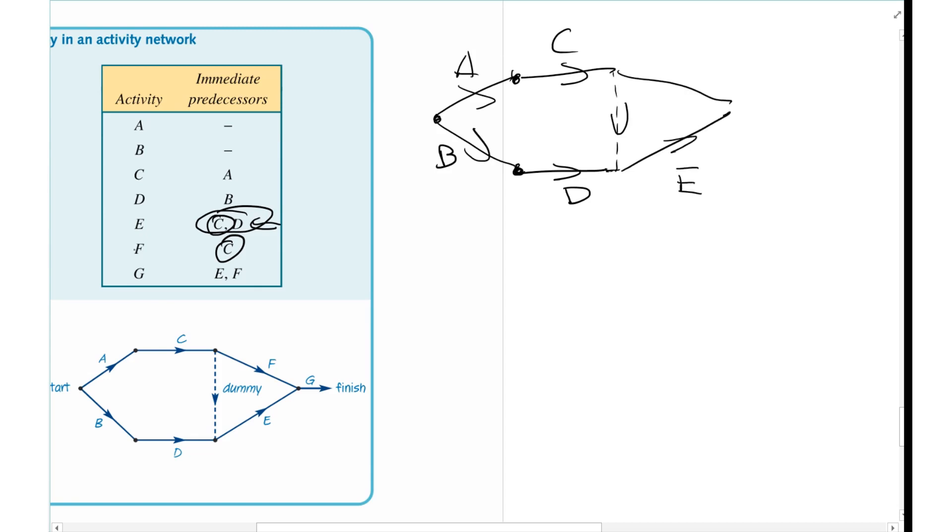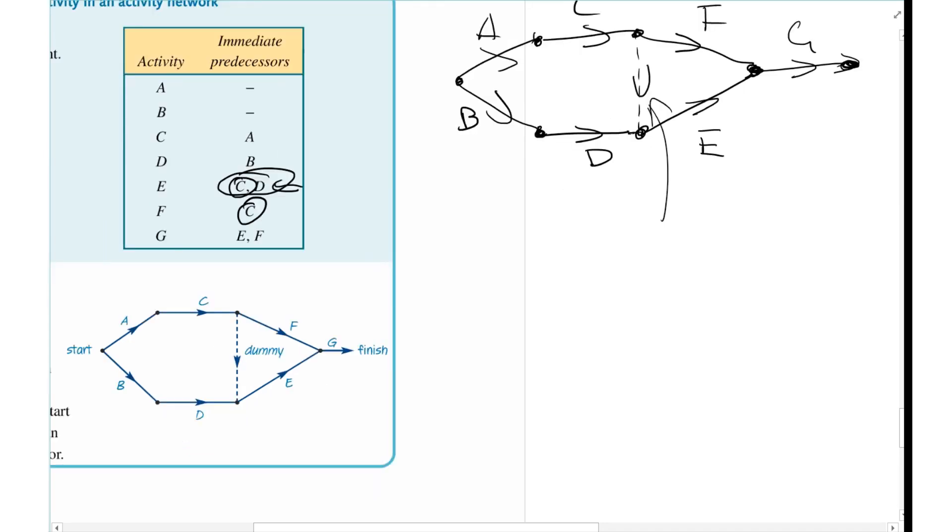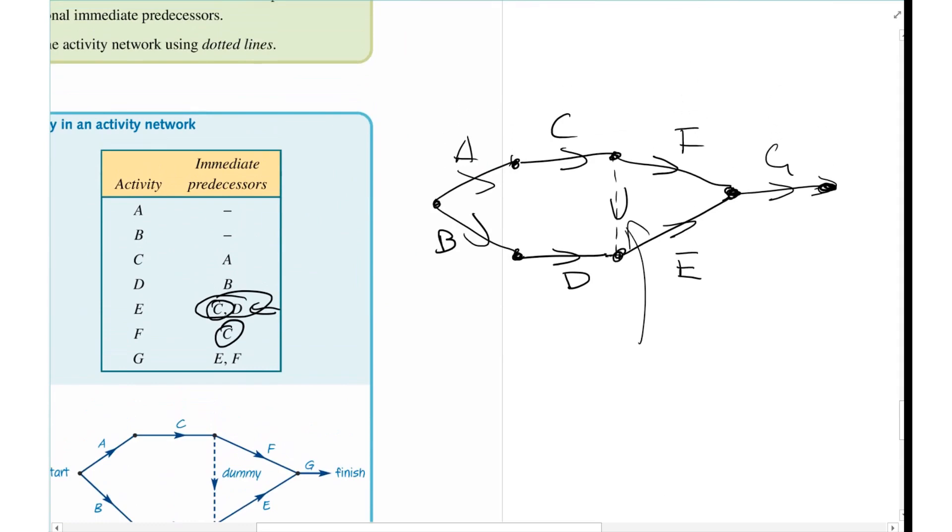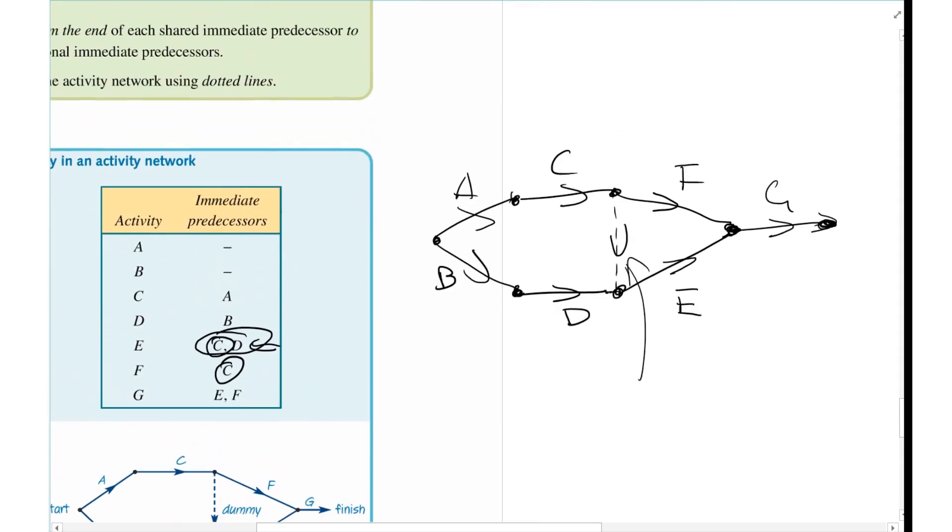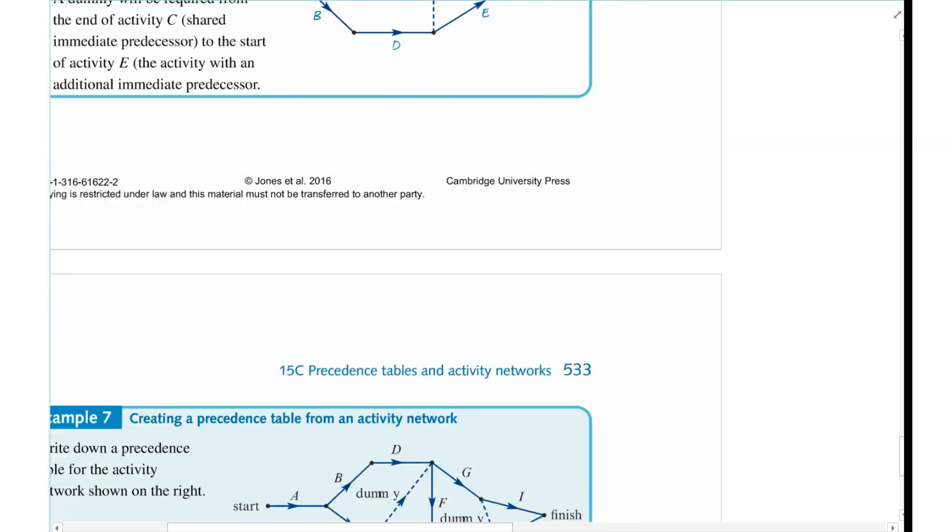And from C, you're going to have C, F. I'll draw an F here. And then as we can see, G needs E and F. That's a finish here. And that's how we've got our dummy. So we've got our dummy activity here. And it matches up. And I was doing that without looking at the answer.